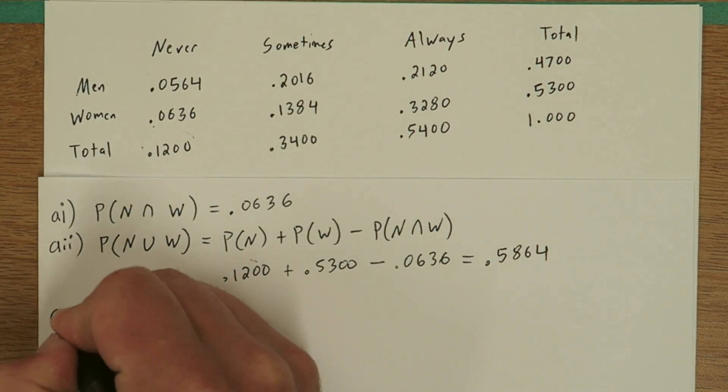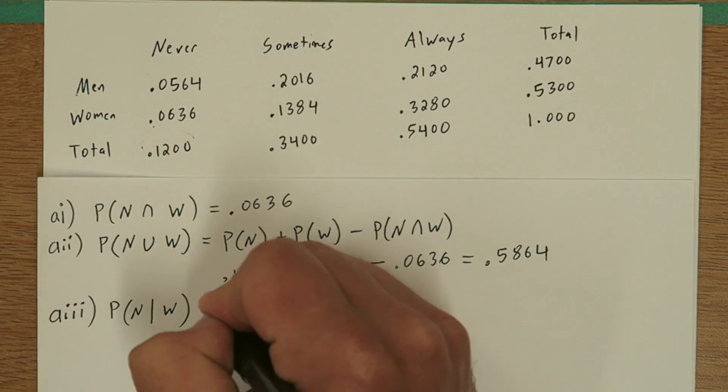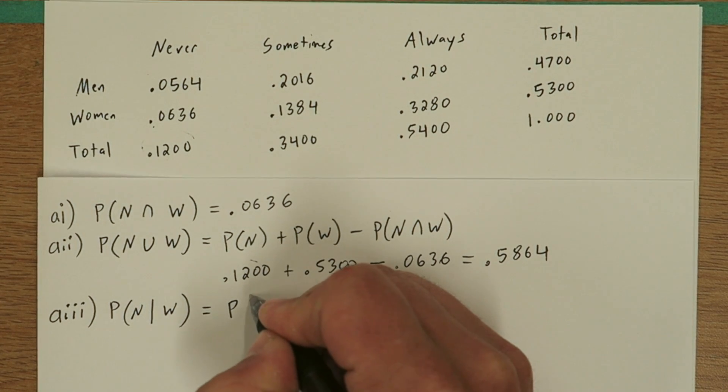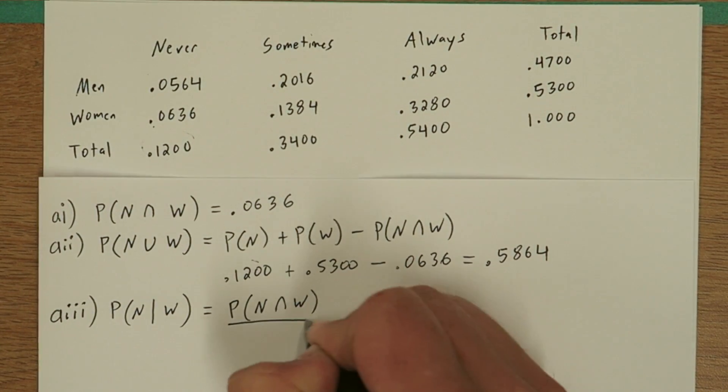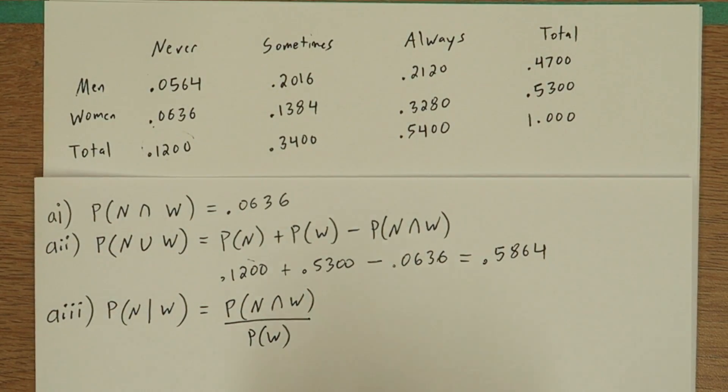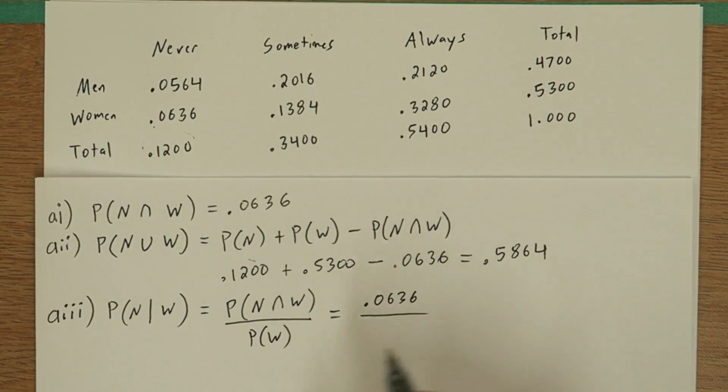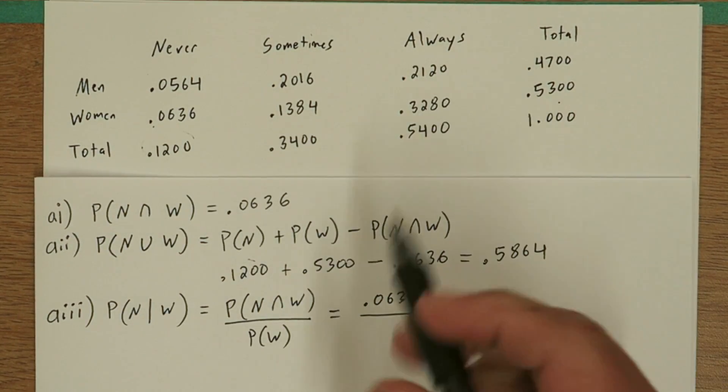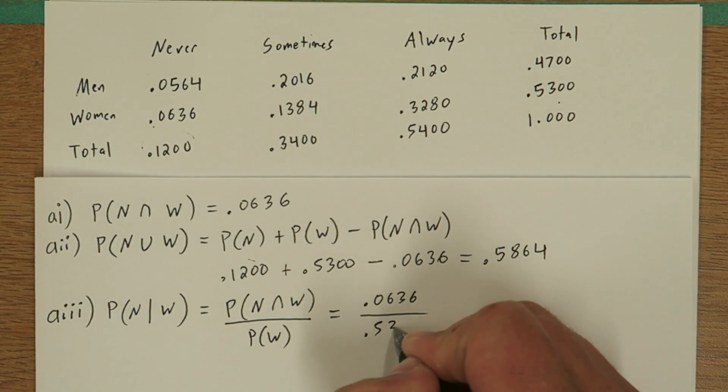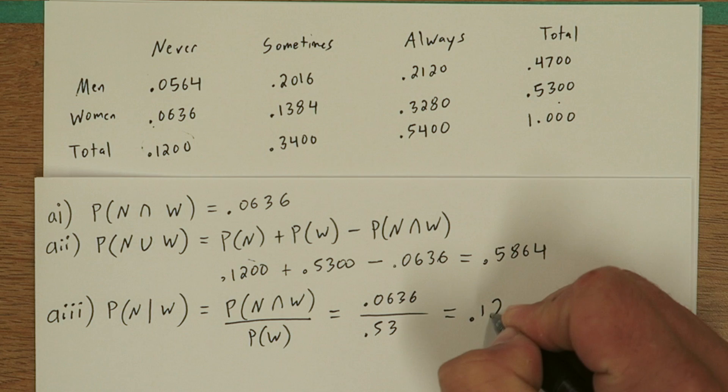In the third part of part A, we're finding the probability of never taking your medication given you're a woman. The formula sheet gives us our formula here. We just take the probability of never and woman and divide that by probability of woman. So we have that from part A, .0636, and probability of woman again is .53. When you do that division, you end up with .12.